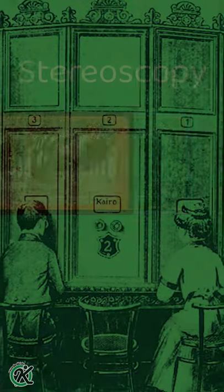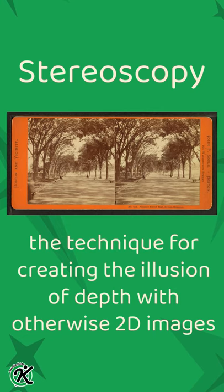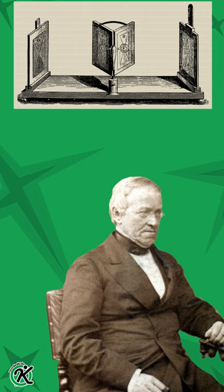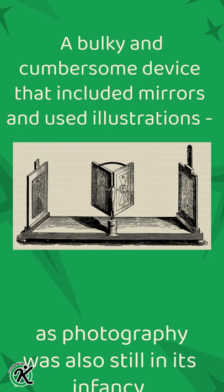Known as stereoscopy, the technique for creating the illusion of depth with otherwise 2D images has had a long, rich history dating back over a century and a half. We are practically still using the same method that Sir Charles Wheatstone invented with a stereoscope in 1838 — a bulky and cumbersome device that included mirrors and used illustrations, as photography was also still in its infancy.